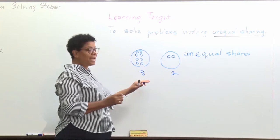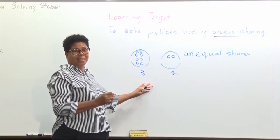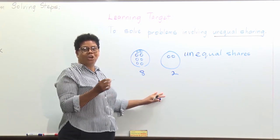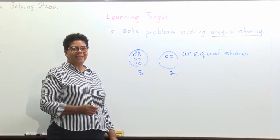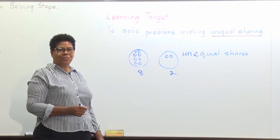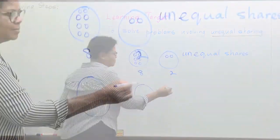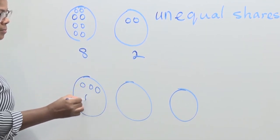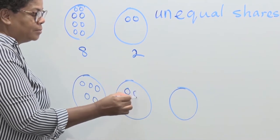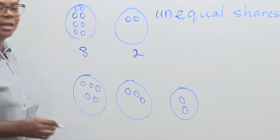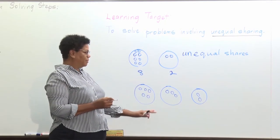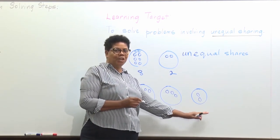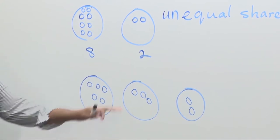Now she could have used those 10 marbles and shared them into 3 groups, 4 groups, or 5 groups with unequal shares. She can also divide the 10 marbles into 3 unequal shares. In the first one she can put 5, in the second one she can put 3, and in the third she can put 2. But 5 is not equal to 3, neither is it equal to 2. None of these shares are equal, so we call them unequal shares.